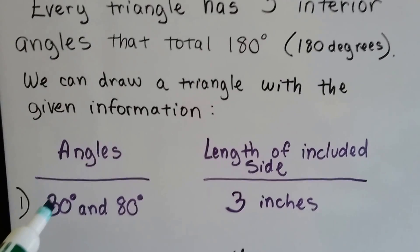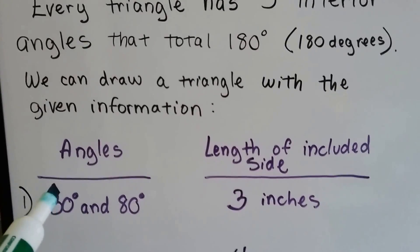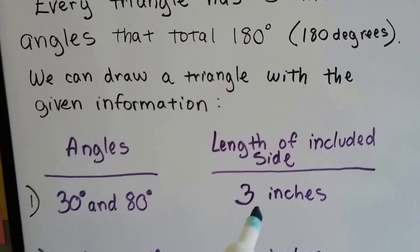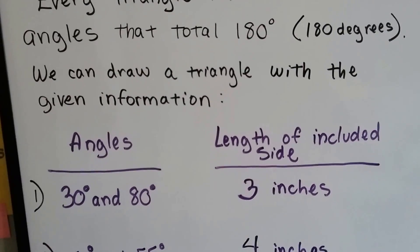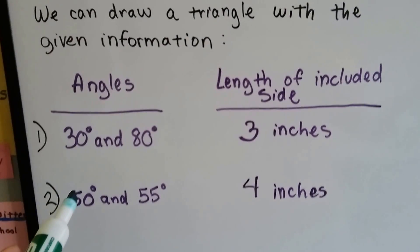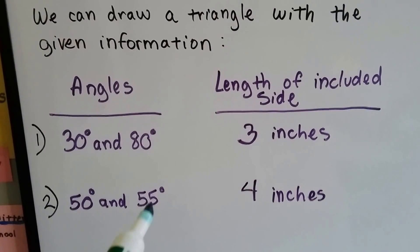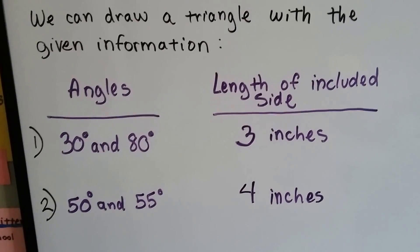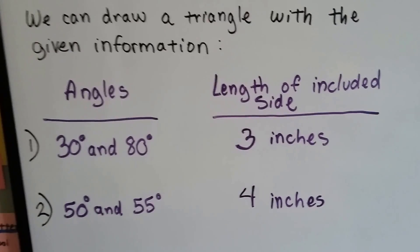If we're told that the angles are 30 degrees and 80 degrees, and there's a length of an included side that's 3 inches, we could draw a triangle. Or, if we're given the angles of 50 degrees and 55 degrees, and a length of an included side of 4 inches, we could draw another triangle.